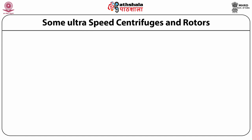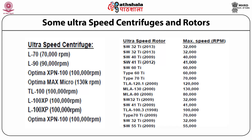Some ultra-speed centrifuge models and their speed limits: L70 model is capable of 70,000 rpm; L90 up to 90,000 rpm; Optima XPN 100 at 100,000 rpm; Optima MAX micro at 130,000 rpm; TL100 at 100,000 rpm; L100 XP at 100,000 rpm. For rotors, for example, SW32Ti was introduced in 2013 with a maximum speed of 32,000 rpm — a list of all rotors is provided with their corresponding maximum speeds.